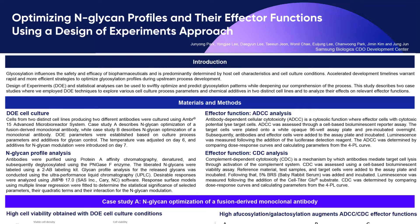We would like to showcase this in two different case studies, demonstrated by two distinct cell lines producing two different antibodies using AMBR15. Case study A describes n-glycan optimization of a fusion-derived monoclonal antibody, while case study B describes n-glycan optimization of a monoclonal antibody.